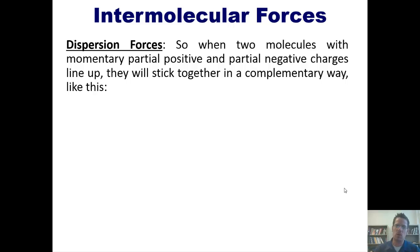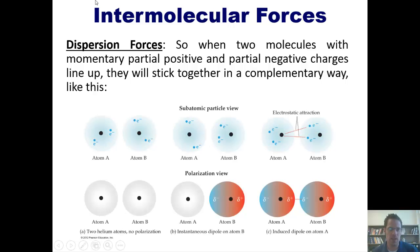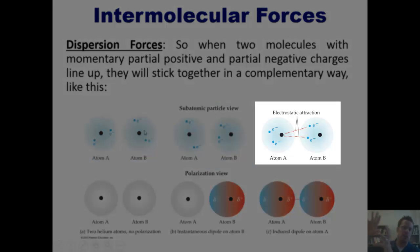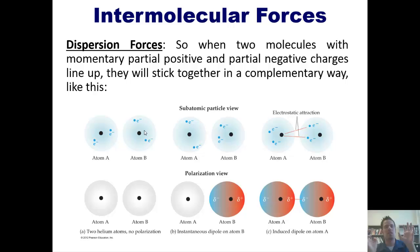So when two molecules with momentary partial positive and partial negative charges line up in a complementary fashion, they can stick together in a complementary way like this. You can imagine, for instance, atom A and atom B having a brief moment in which all the electrons are on one side of atom A and are on the opposite side of atom B, so when they stick together, there's a momentary partial positive charge on one side of that atom and a partial negative charge on the other side of the atom and they'll stick together.